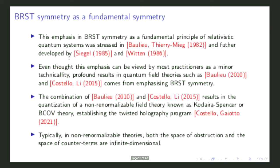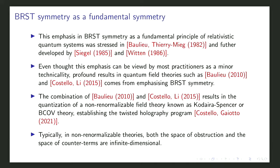BRST symmetry as a fundamental symmetry of physics was stressed in 1982 by Batalin and Vilkovisky and further developed by Siegel in 1985 and Witten in 1986. These works were in string field theory but always emphasized that this is general — not just for string theory but for all relativistic systems. Profound results in quantum field theory, such as Batalin's work in 2010 and Costello–Li in 2015, come from emphasizing this BRST symmetry, resulting in the quantization of a non-renormalizable field theory known as Kodaira–Spencer or BCOV theory, establishing the twisted holography program.